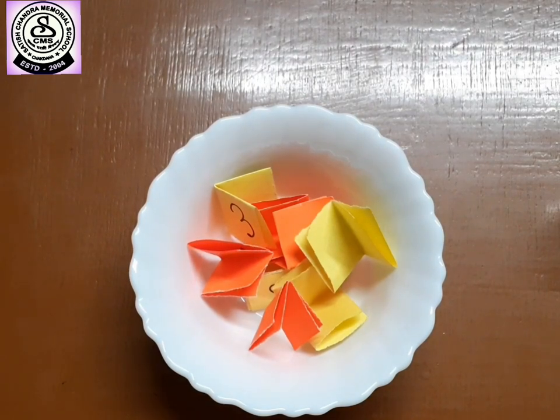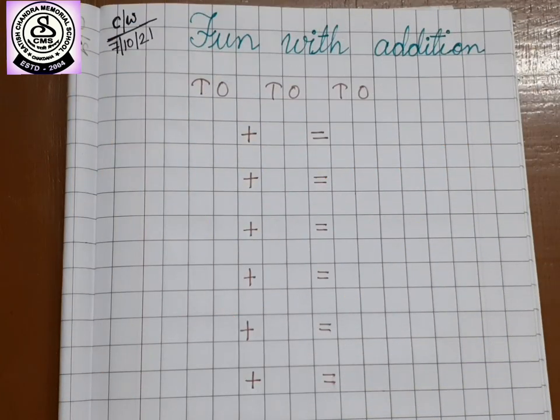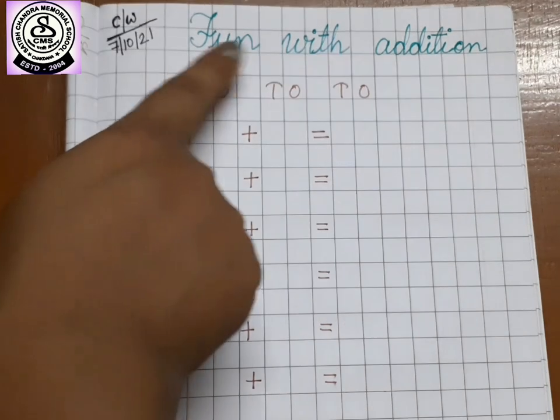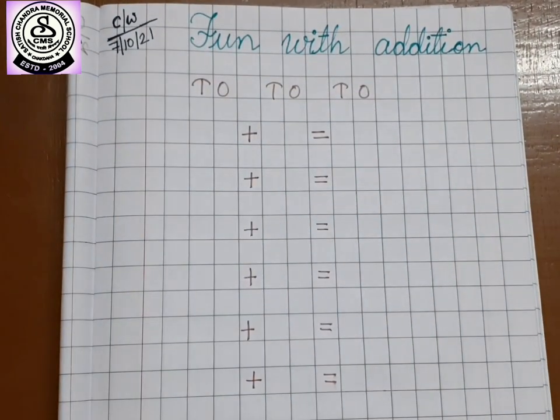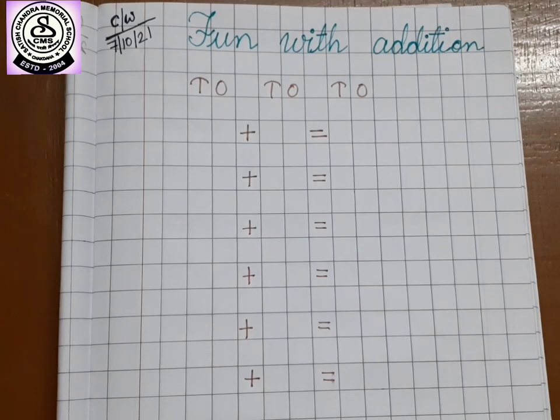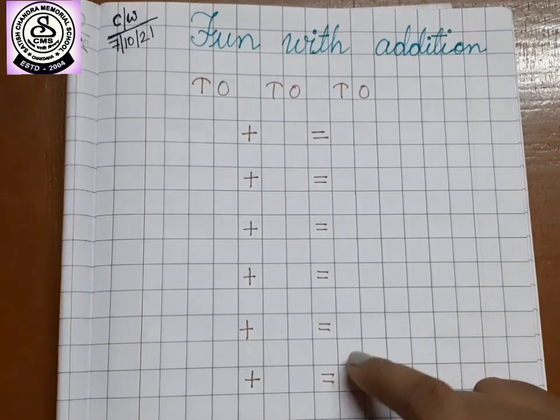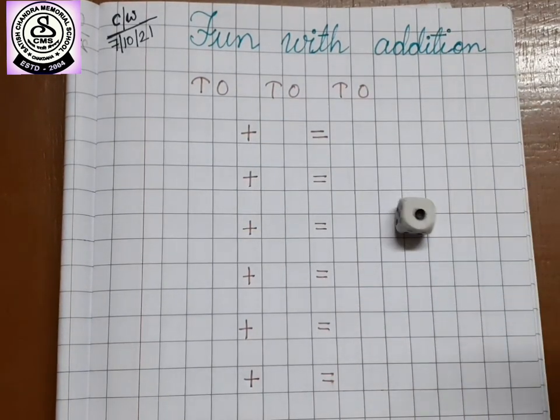Now, let me show you all game number two. Our next one is another game. Here, we are going to do some written addition. See kids, we have written here fun with addition. So, that means we are going to have fun doing this work. Again, we are going to use the dice. You can see, we have written one sentence and made the copy. Now, I am going to roll the dice.